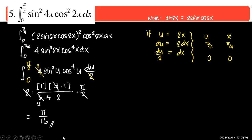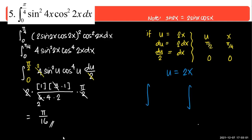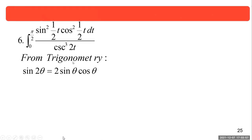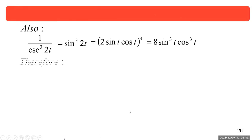To change the limits: originally x goes from 0 to pi over 4. Since u equals 2x, we substitute: 2 times 0 gives 0, and 2 times pi over 4 gives pi over 2. So we plug those x-values into u to get the new limits. That change of limits is what allowed us to apply Wallis. This is from trigonometry: sine 2 theta equals 2 sine theta cosine theta.